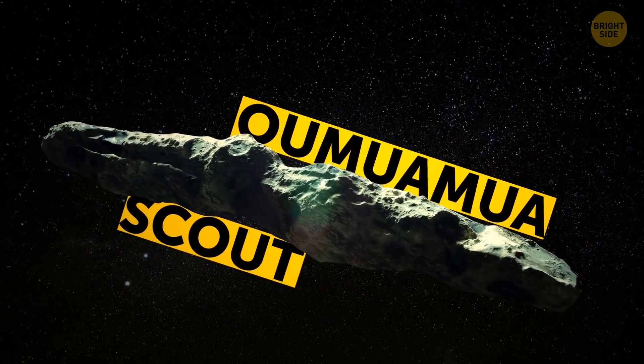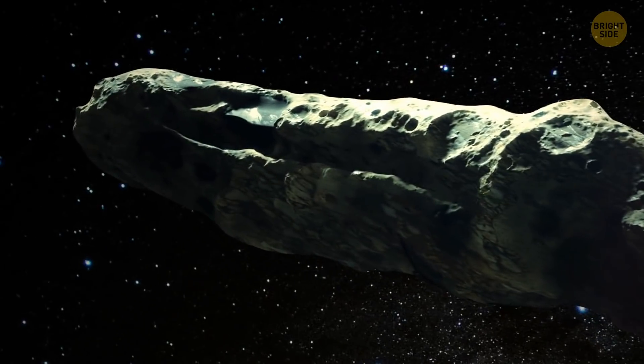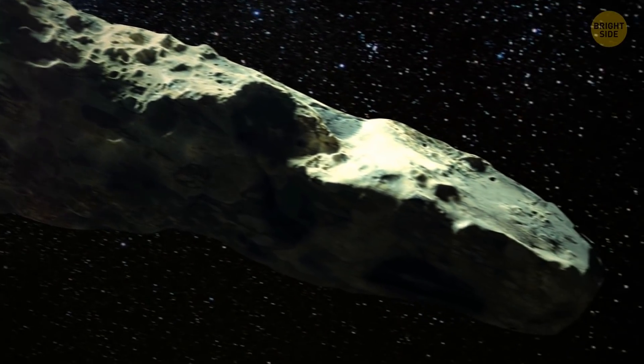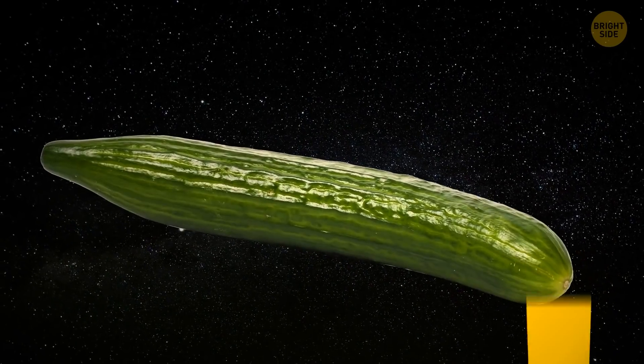Oumuamua, which means scout in Hawaiian, is an elongated body that resembles a big space cucumber, definitely something unseen before.